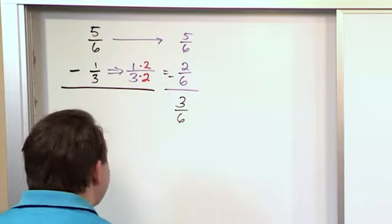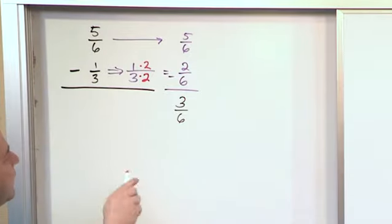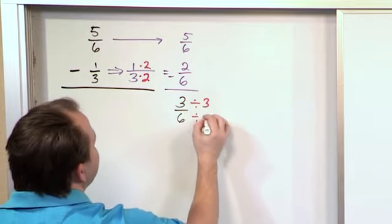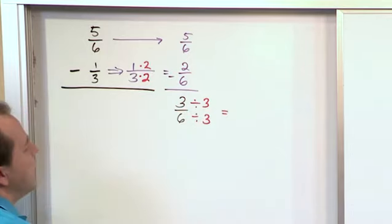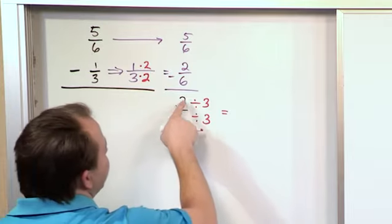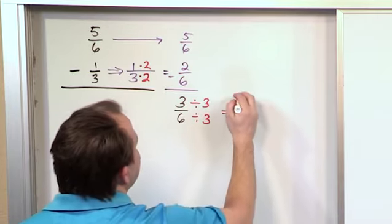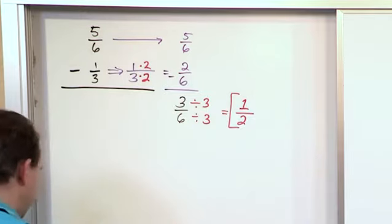But also we always check after we do anything with fractions, can we simplify it? And we see right away that we can divide the top by 3 and the bottom by 3. We can do that as long as we do it to top and bottom. 3 divided by 3 is 1. 6 divided by 3 is 2. So the answer to this problem is 1 half. That's fully simplified.